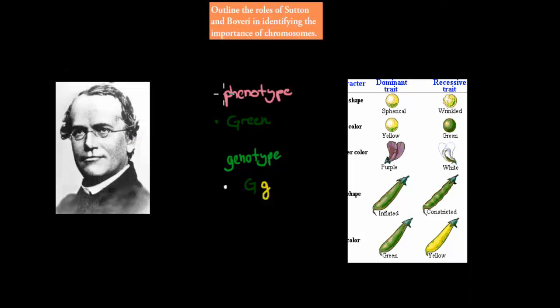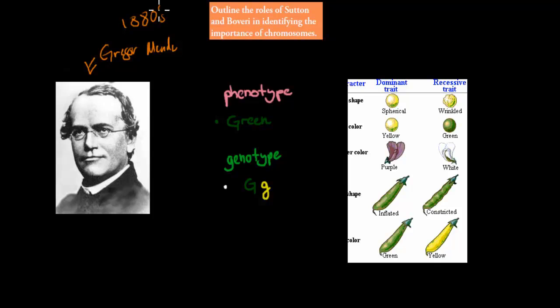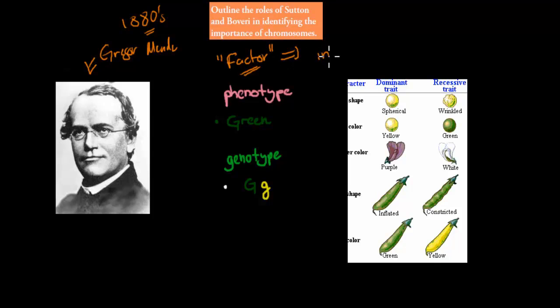So far we've talked a bit about Gregor Mendel and who he was. He lived in the 1800s and died somewhere in the 1880s. When he died, his ideas weren't picked up at all yet — they were still a mystery. He talked about things he described as factors, and these factors were what actually caused inheritance.